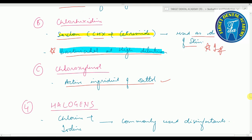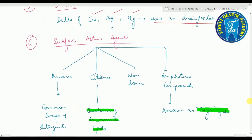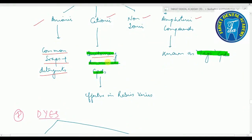Halogens — chlorine and iodine — are used as disinfectants. Salts of copper, silver, and mercury are also used as disinfectants. Surface active agents have four types: anionic compounds — commonly used as soaps and detergents; cationic quaternary ammonium compounds — effective against rabies virus; non-ionic compounds; and amphoteric compounds — also known as Tego compounds.